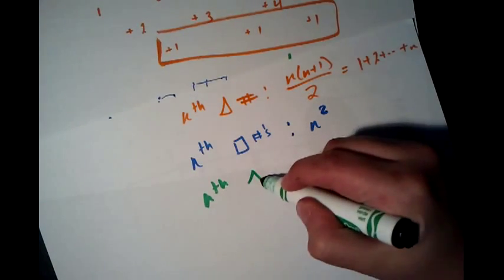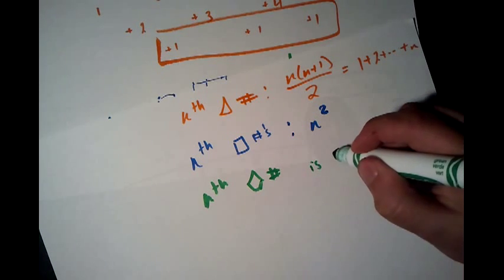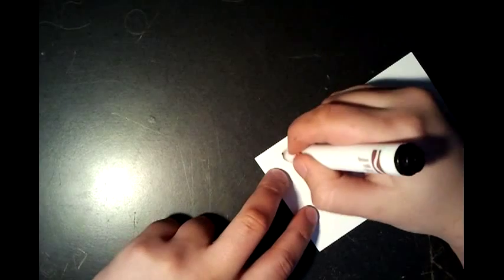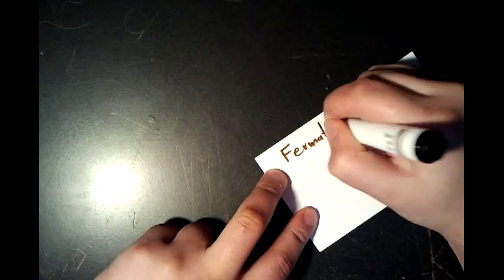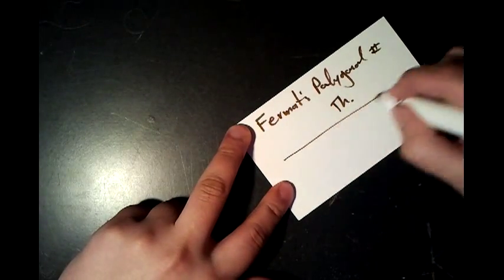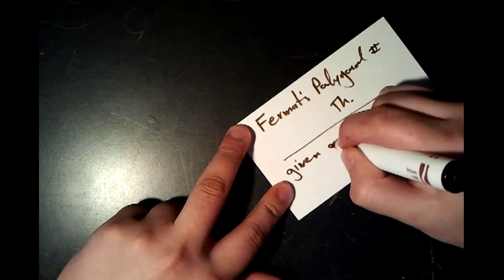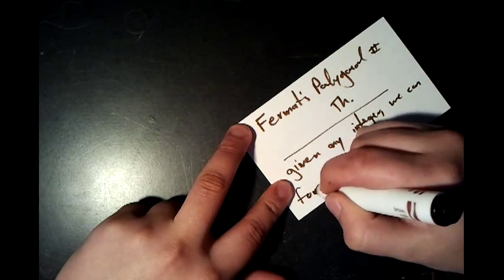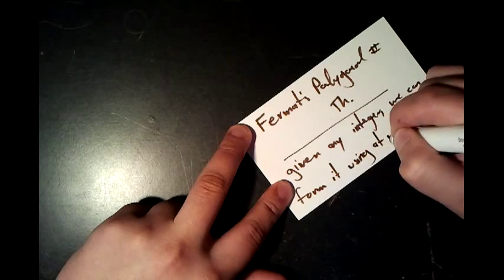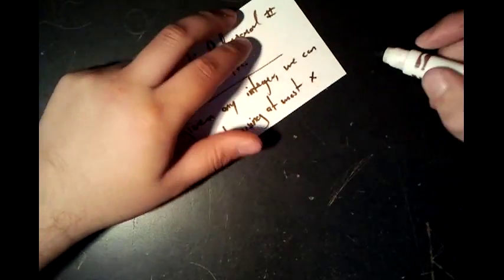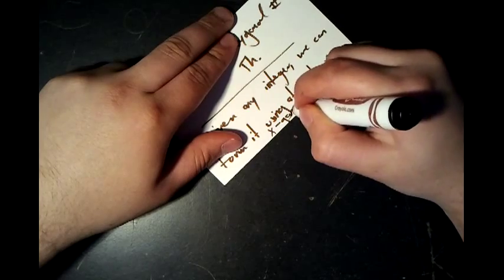And then the nth pentagonal number is given by n times three n minus one over two. For Fermat's polygonal number theorem. And that says that given any number, any integer, we can form it using at most x x-gonal numbers.